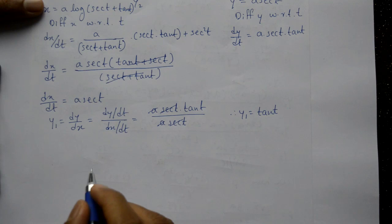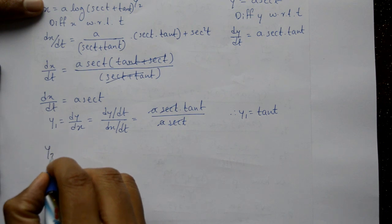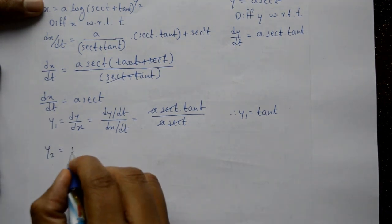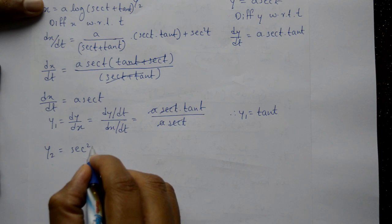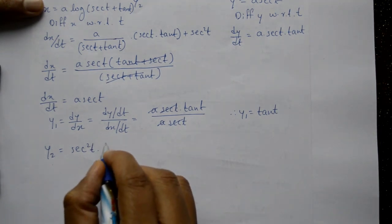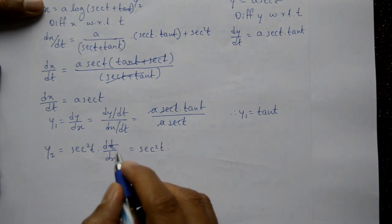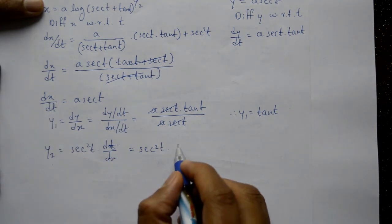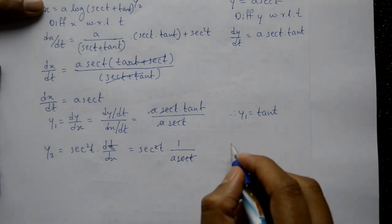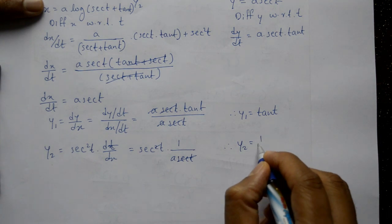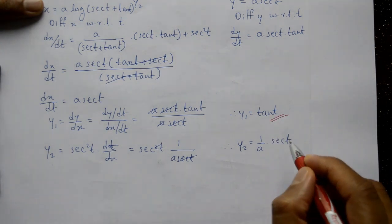To find y₂, differentiate y₁ = tan t with respect to x. y₂ = d(tan t)/dx = sec²t · (dt/dx). Since dt/dx = 1/(dx/dt) = 1/(a·sec t), we get y₂ = sec²t · (1/(a·sec t)) = (1/a)·sec t.